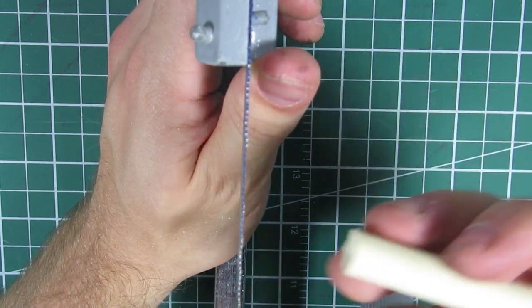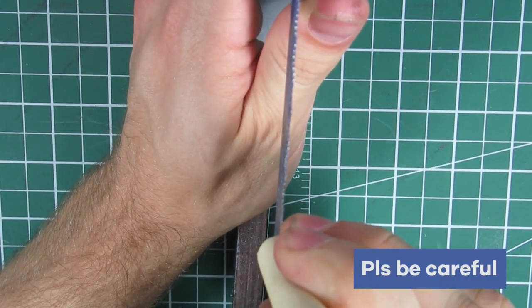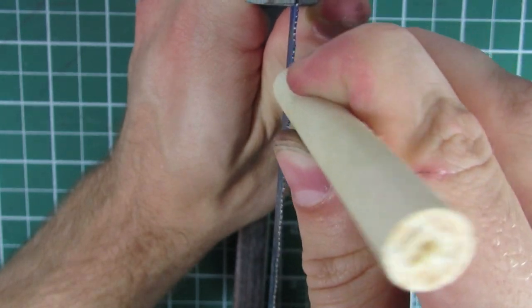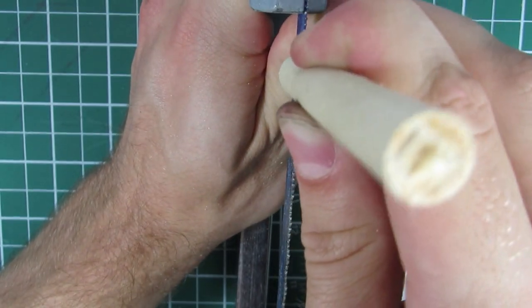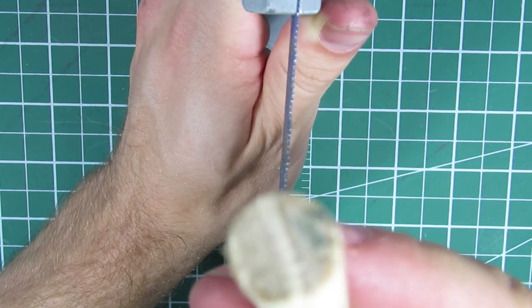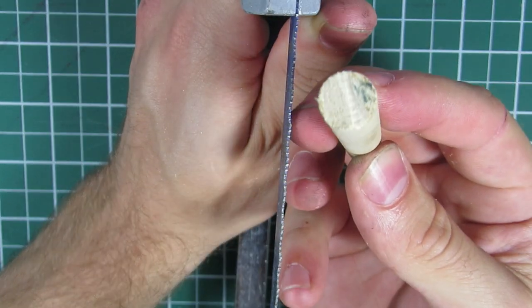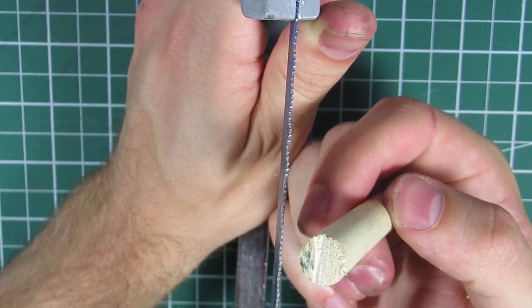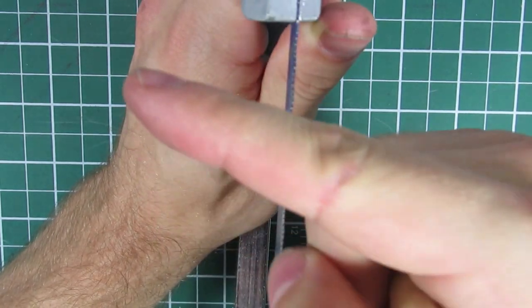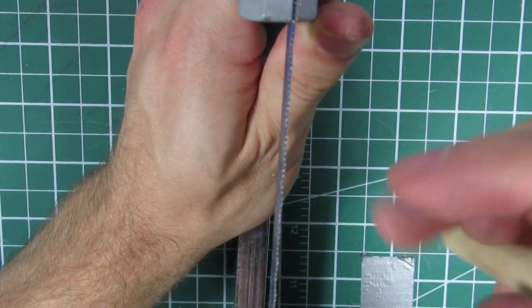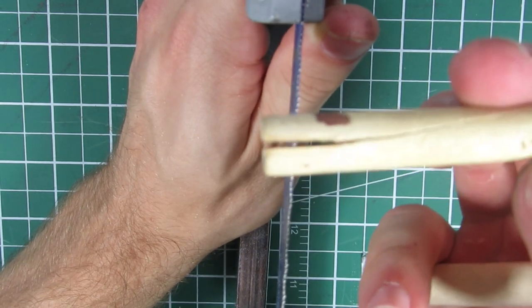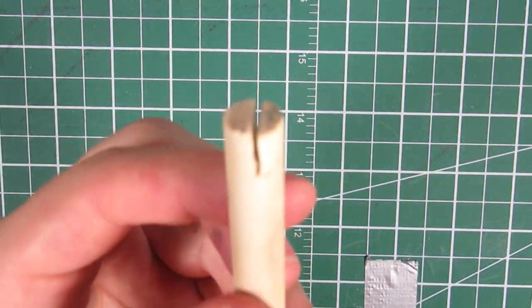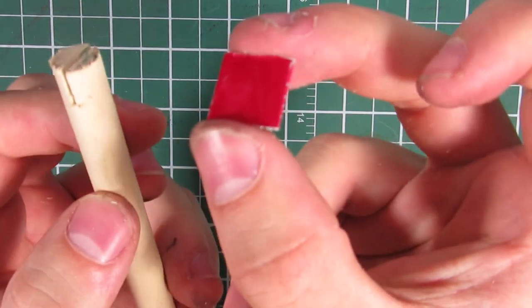Take your hacksaw and you want to run your doweling on the spot where you want to make the slot until you get a decent enough indent, probably around half centimeter to a centimeter. Now be very careful when you're doing this. I gave myself quite a good gash when my doweling split when I was making this a couple weeks ago, so be very very careful.